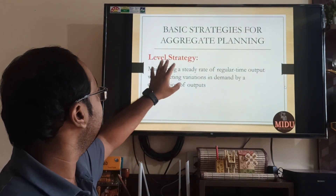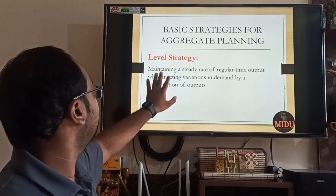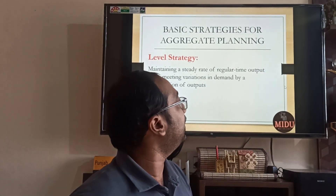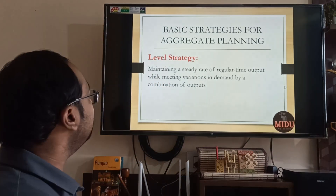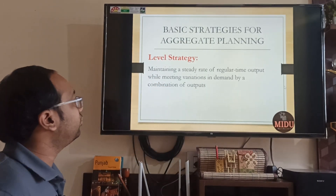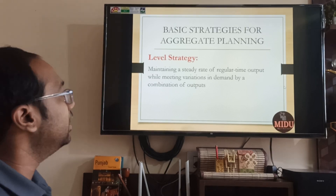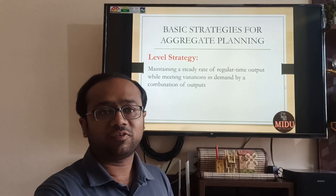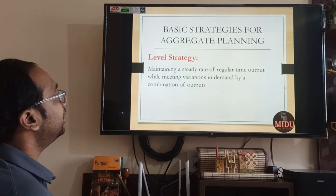There are two strategies, my dear friends. The first is known as Level Strategy — maintaining a steady rate of regular time output while meeting variations in demand by a combination of outputs. I will explain it from a graph. Let us see the graph in the next slide and then you will understand.